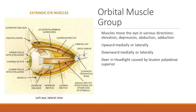Muscles move the eye in various directions: elevation moving upward, depression moving downward, abduction moving the eye outward, and adduction moving the eye toward the centerline of the body. We can also move upward medially or laterally, downward medially or laterally. If you open your eyes wide open, you get what's called the deer-in-headlights look, caused by the levator palpebrae superioris muscle.